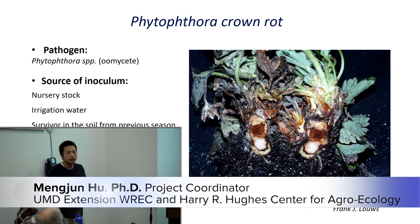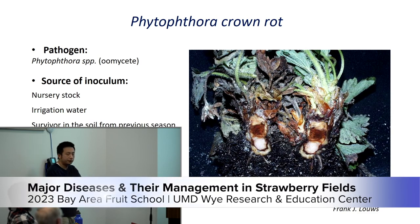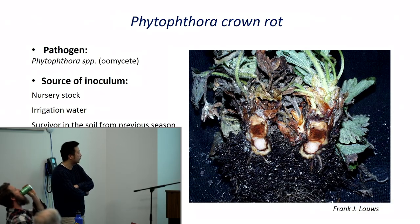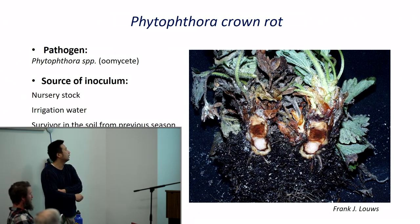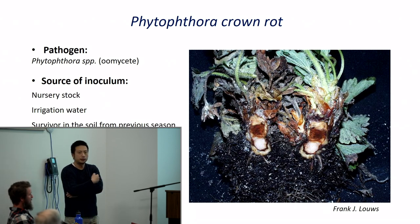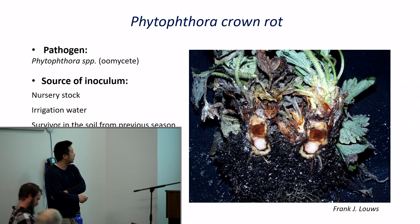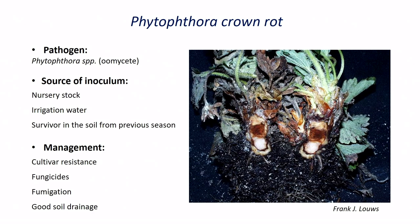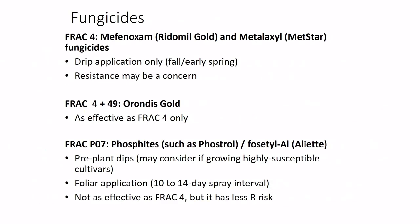Moving on to Phytophthora crown rot. There are multiple Phytophthora species associated with this disease, most commonly Phytophthora cactorum. Nursery stock is again considered a major source of inoculum. Irrigation water — since it's a waterborne pathogen — and soil survival from previous seasons can also contribute to infection. Fungicides are the main tool for Phytophthora. There are cultivars more tolerant to this disease, but if you have the issue you'll likely use fungicides. Ridomil Gold is commonly used for Phytophthora control, applied through drip irrigation, but resistance is a concern.